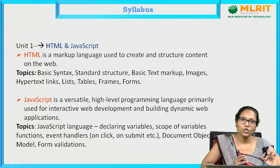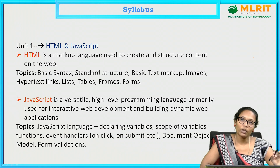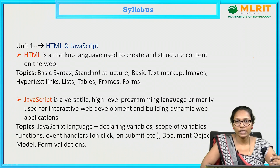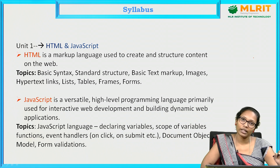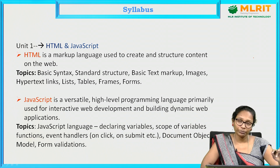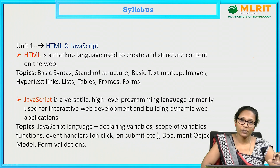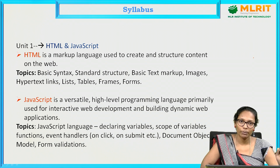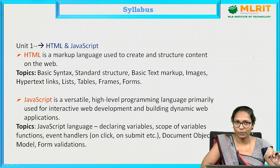Till now we discussed in general what is web programming and what are the prerequisites. According to the MLRIT syllabus, this subject contains 5 units, each related to a different technology. If you complete all 5 units you will be able to develop your own web page, as they cover front end technologies, back end technologies, database management, and libraries and frameworks.